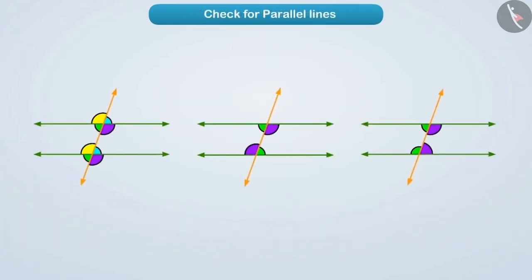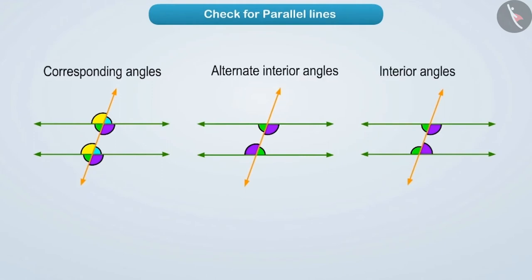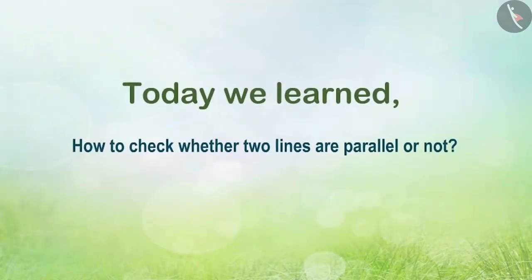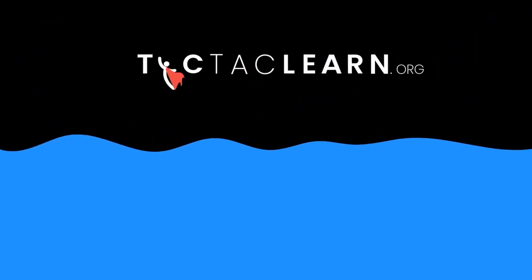In this way, you can now check for parallel lines using corresponding angles, alternate interior angles, and interior angles on the same side of the transversal. Today we learned how to check whether two lines are parallel or not. In the next video, we will see some examples related to this concept.